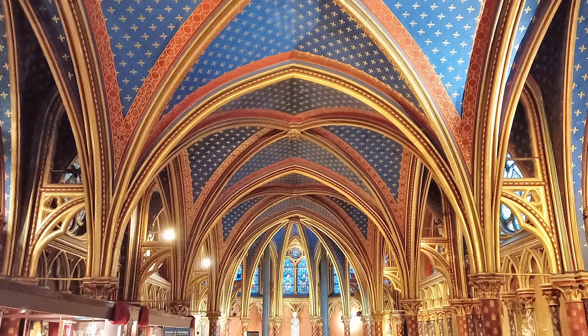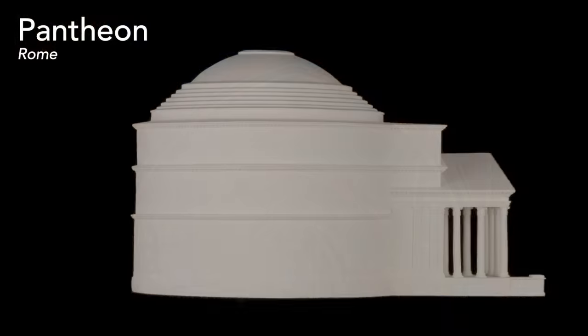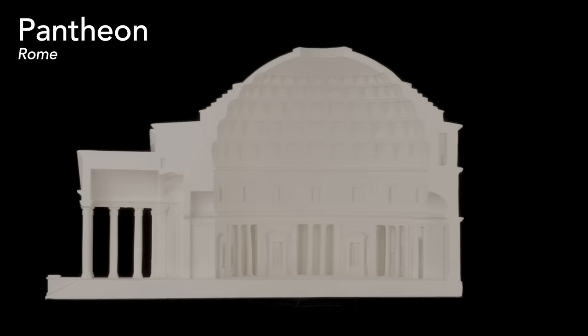They chose this pointed arch over the arch used in the Romans' extraordinary pantheon, built about 1400 years before Saint-Chapelle. The pantheon, typical of all imperial Roman architecture, features a semicircular arch. It is exactly half of a circle.